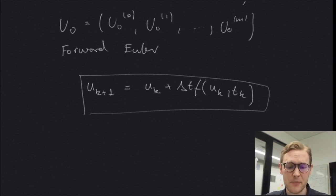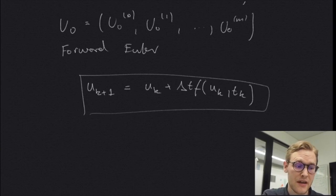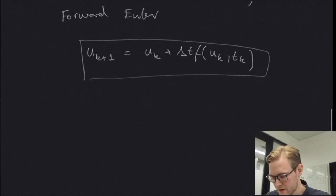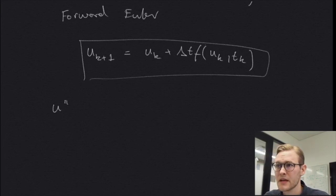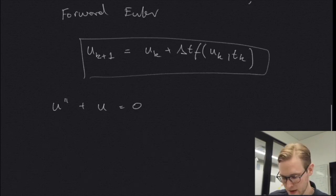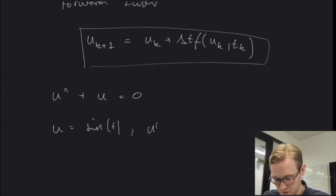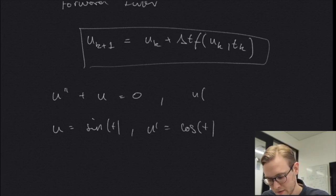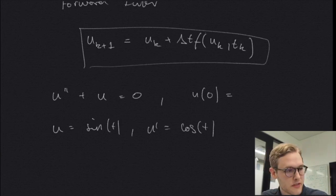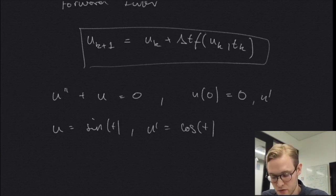Let's look at an example. We'll take a higher order differential equation and see how we can adapt it to a system of equations and solve it. Say we have the second derivative of u plus u equals 0 — a second order ODE with a known analytical solution: u equals sin(t), and the derivative of u equals cos(t), given initial conditions u(0) = 0 and u'(0) = 1.